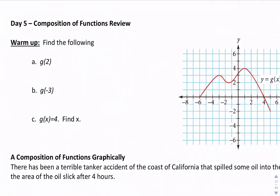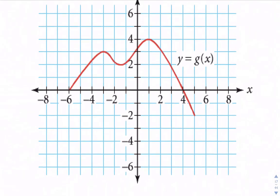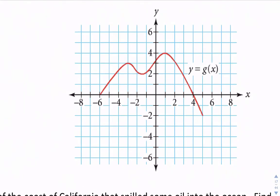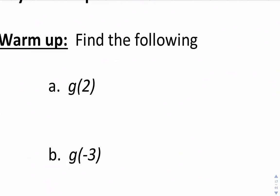Day 5, we're going to look at composition of functions again. For the warm-up, find the following: g of 2, which means when the input is 2, what is the output? The input is the x value, so in our graph we'll find where x is 2. When the x value is 2, the output would be 3. So we'll say g of 2 equals 3.